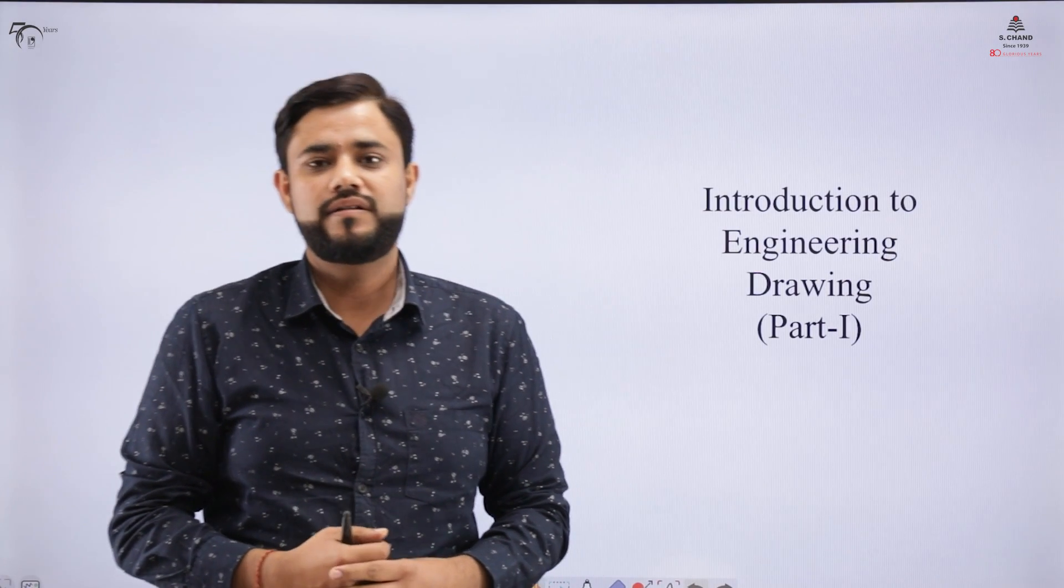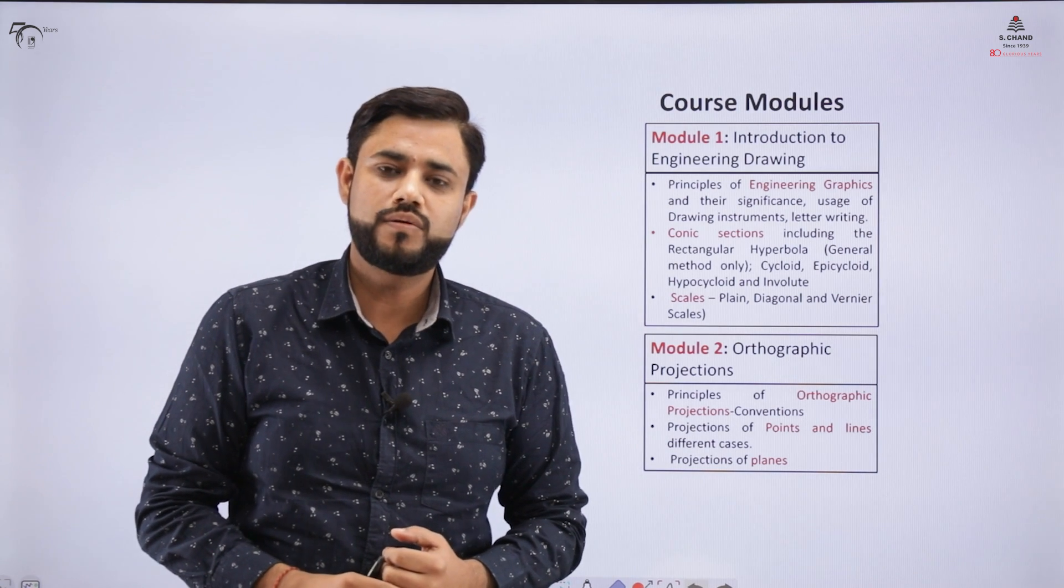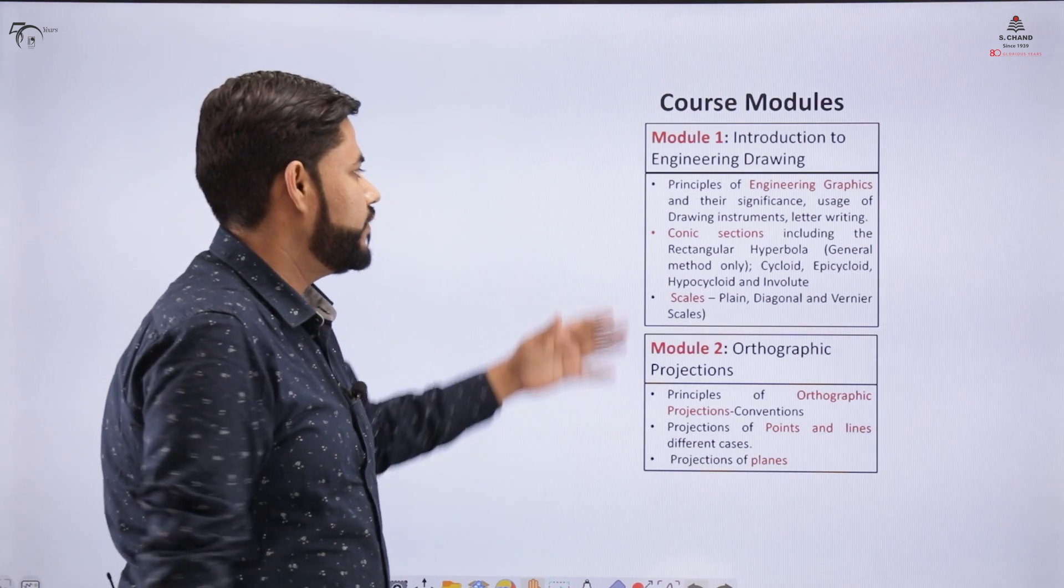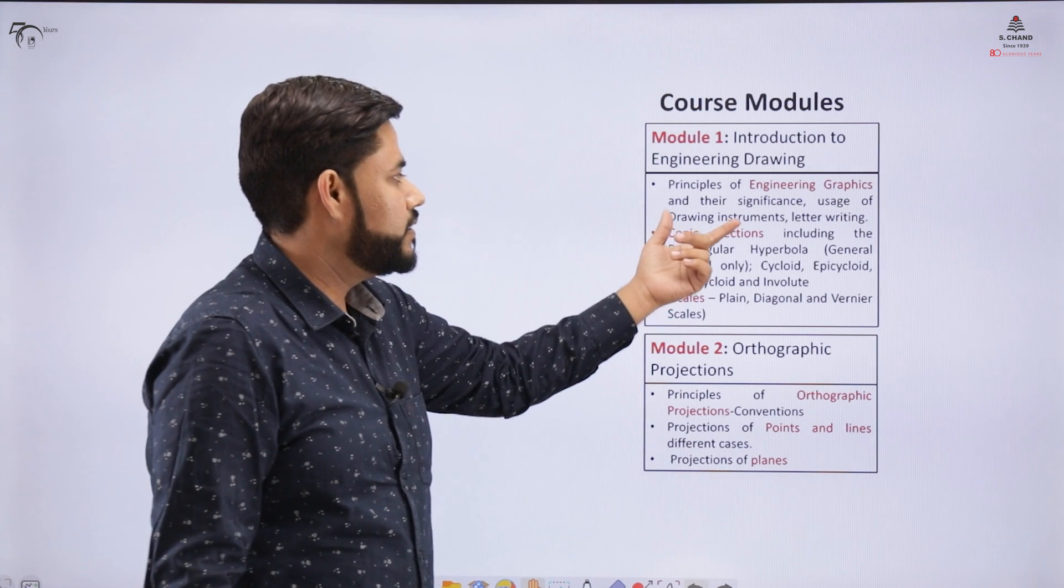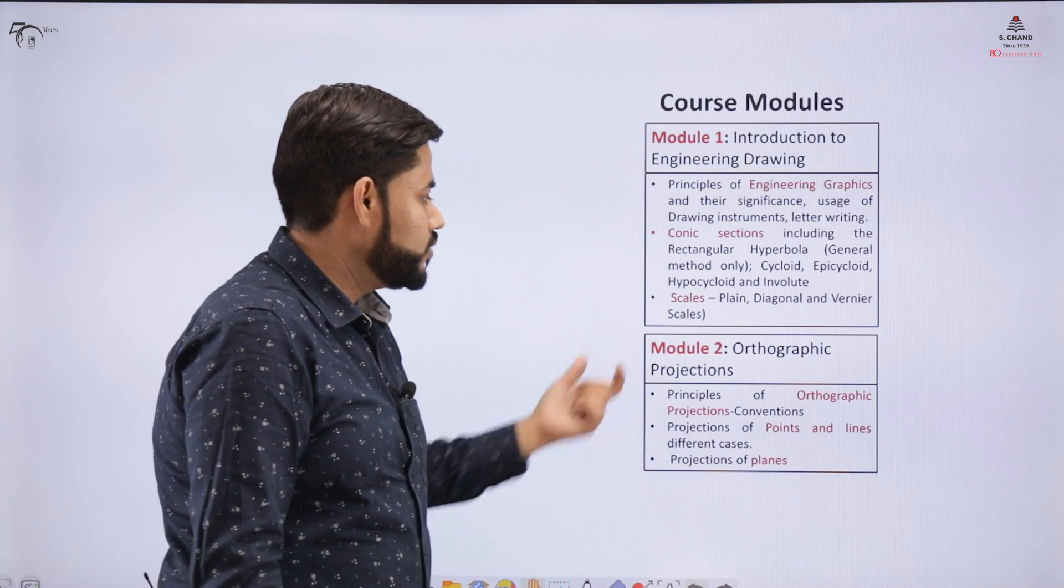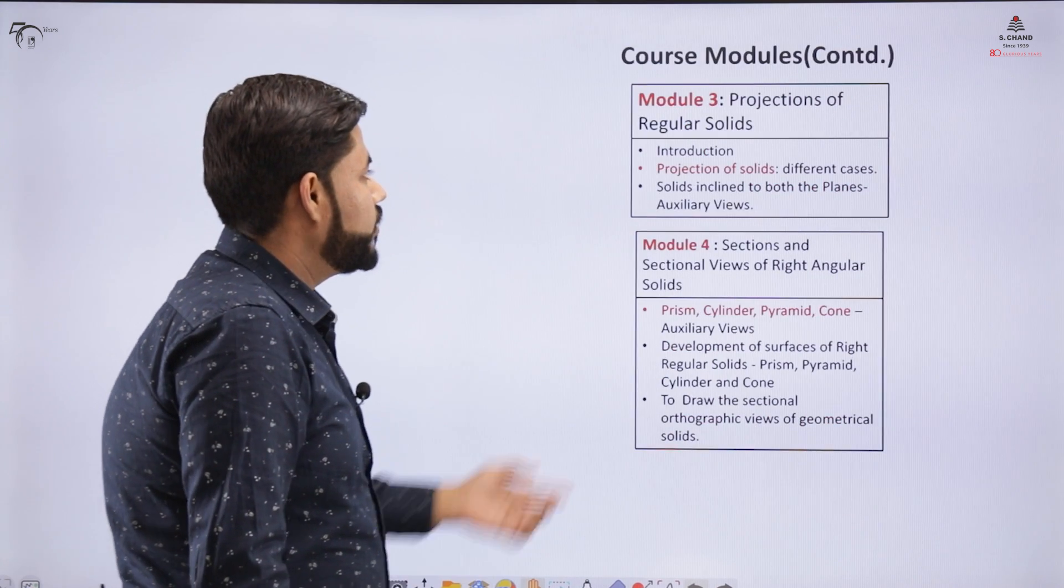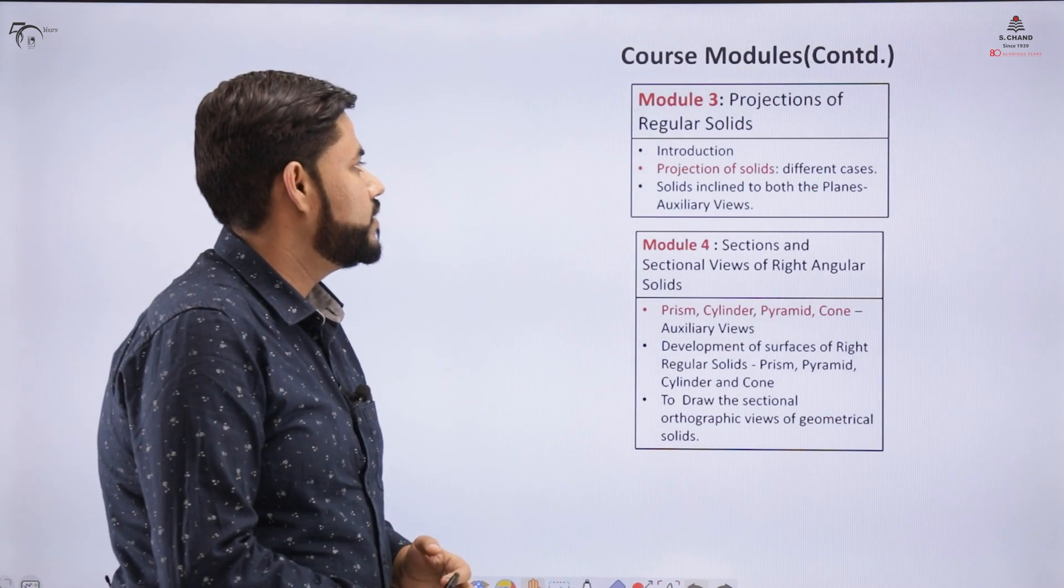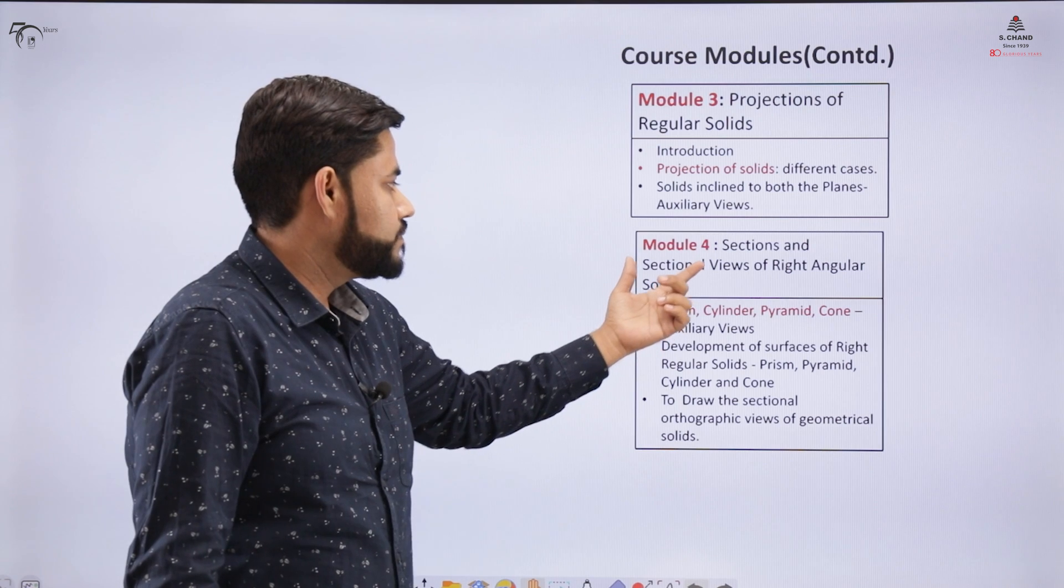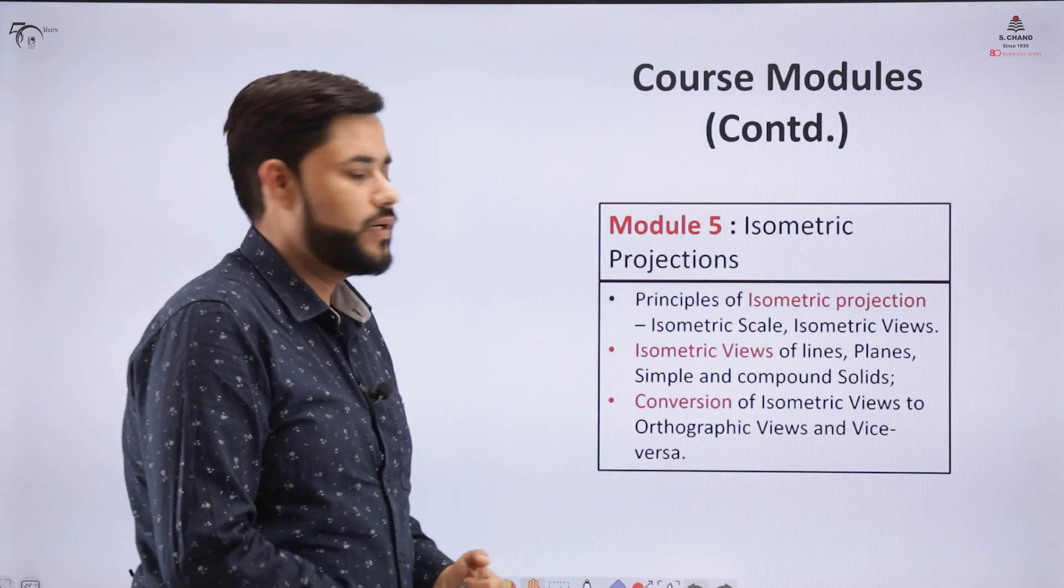This is introduction to engineering drawing. The course consists of five modules: the first module is introduction to engineering drawing which includes usage of this course and the conic section part. In module 2 you will come across the concept of orthographic projections. In module 3 you will study about the projections of solids and then sections of solids in module 4. Module 5 is related to isometric projections.